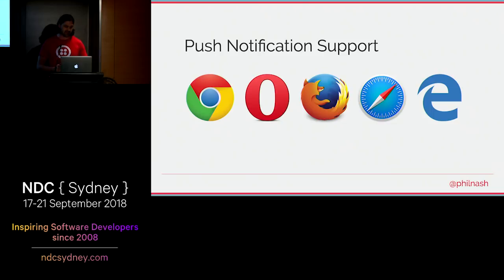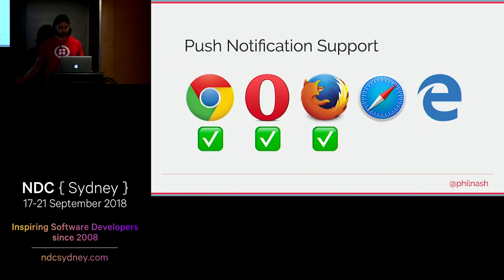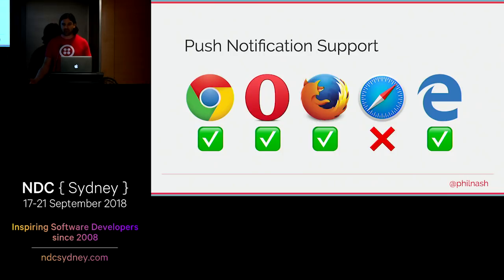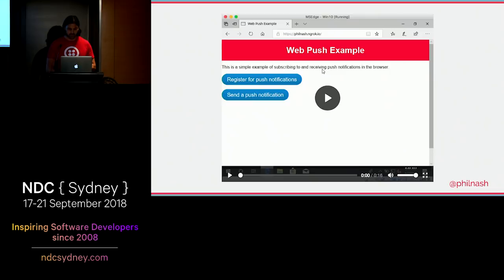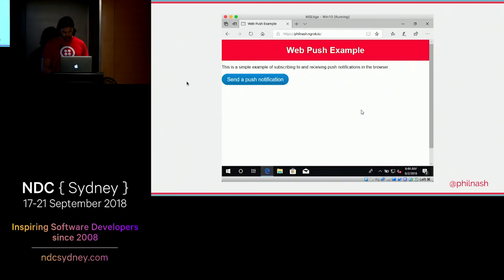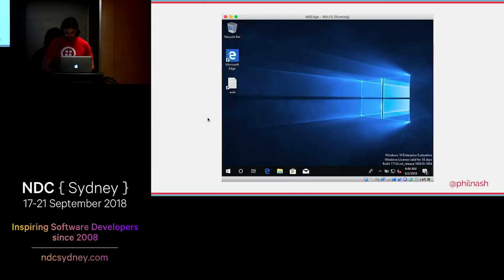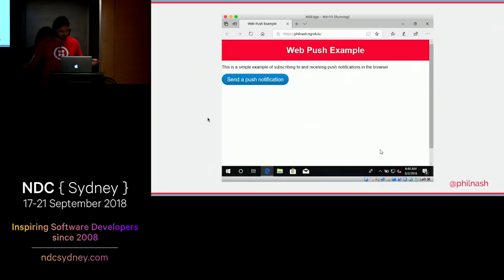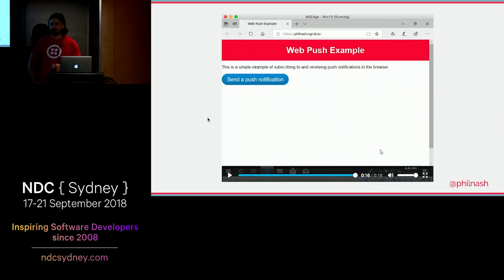Browser support for push notifications is actually pretty good. It's supported in Chrome, Firefox, and Opera — not Safari, but Edge. I was really delighted that Edge's first release of service workers also came with push notifications. I was so excited at the time that I was building a demo, instantly downloaded a VM and spun up VMware to test it working in Edge — without changing anything from my Chrome demo — and it just straight up worked.